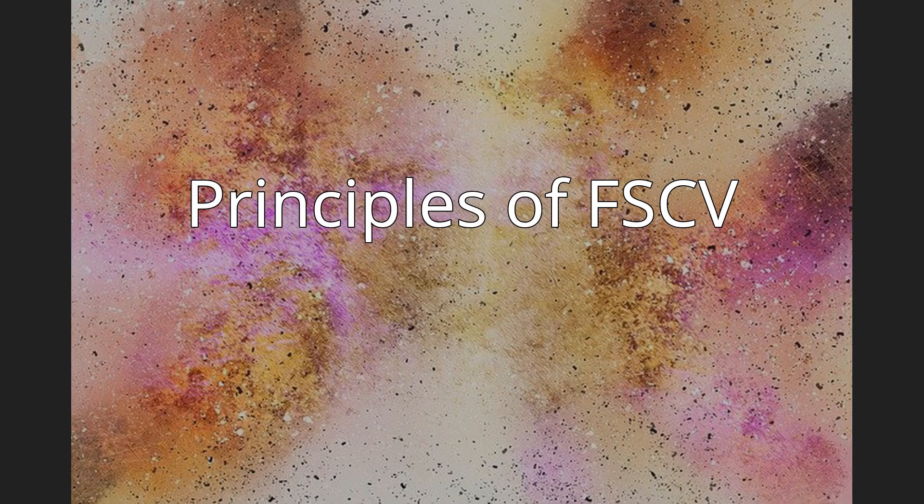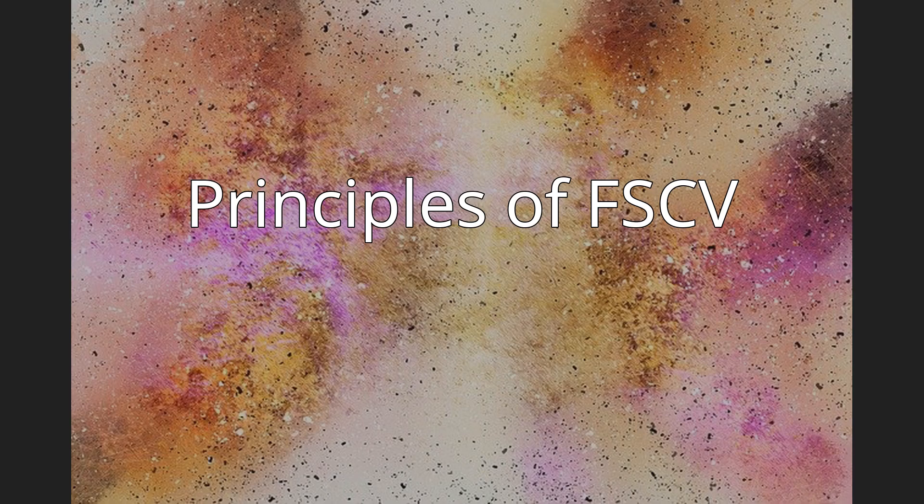In Fast Scan Cyclic Voltammetry, a small carbon fiber electrode on the micrometer scale is inserted into living cells, tissue, or extracellular space. The electrode is then used to quickly raise and lower the voltage in a triangular wave fashion. When the voltage is in the correct range — typically plus one volt — the compound of interest will be repeatedly oxidized and reduced.